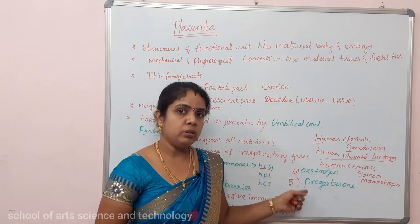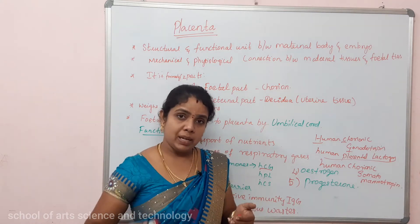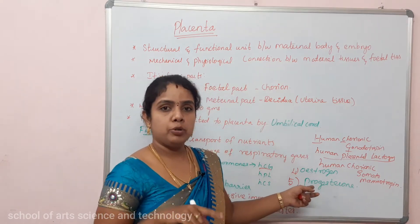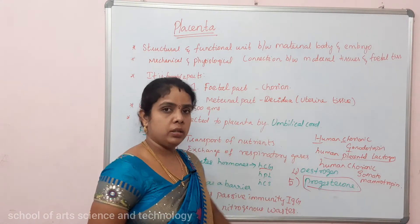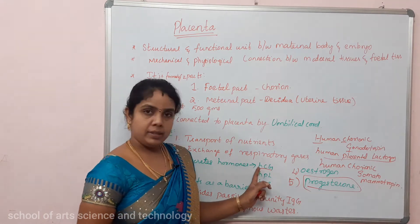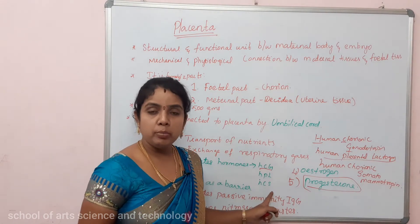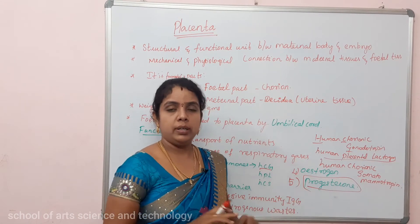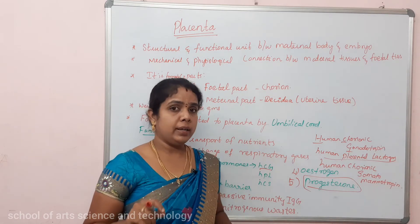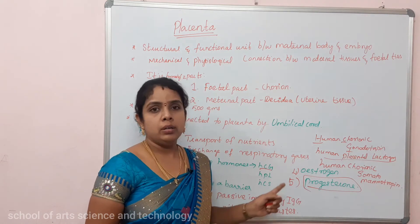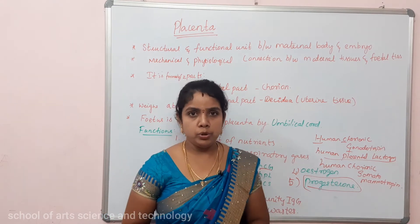Once the placenta is produced, it takes over the function of producing progesterone. So why do we say the placenta is an endocrine tissue? Because it produces hormones — HCG, HPL, HCS, estrogen, and progesterone — which help in pregnancy and childbirth. That is why we can say the placenta acts as an endocrine tissue.